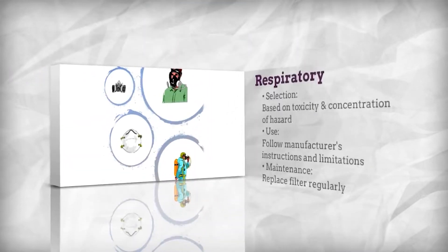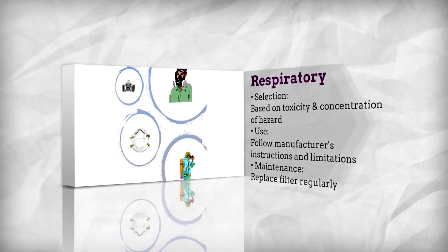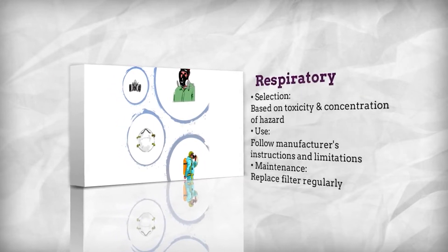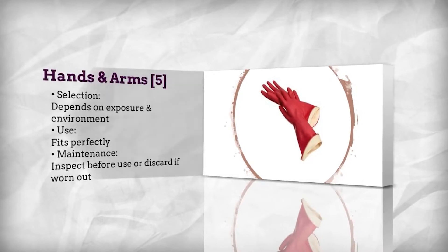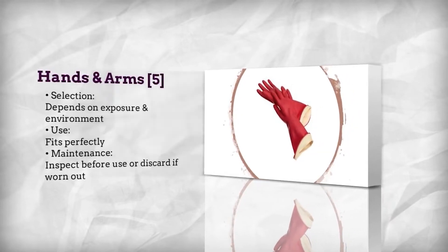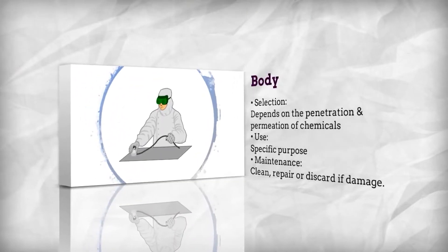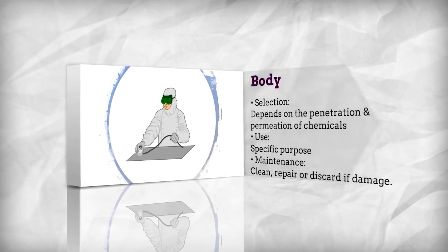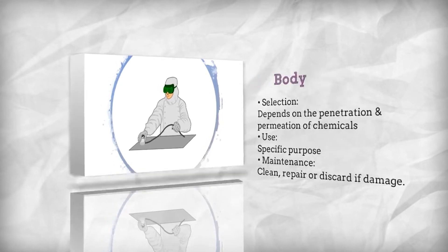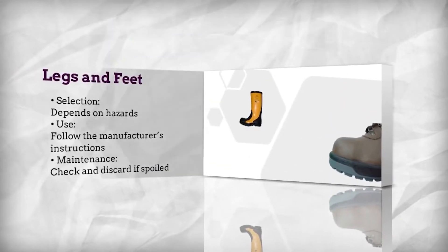To select a respirator, the toxicity and concentration of chemicals must be measured. Make sure to use a properly fitted glove. If there is any damage on the suit, it must be repaired or discarded. The selection of leg and feet protection is based on the identified hazards.